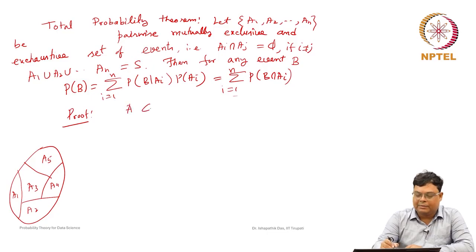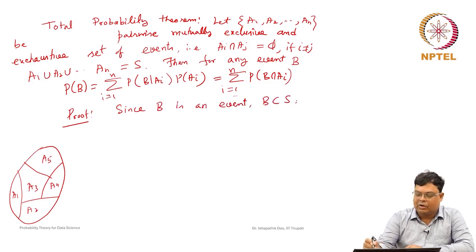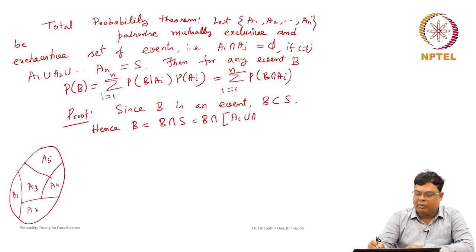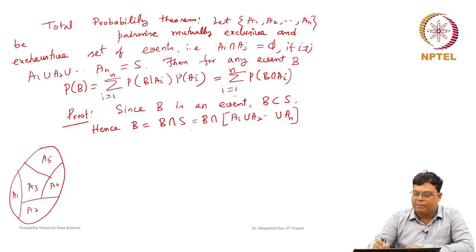Since B is an event, B is a subset of S. Hence B can be written as B ∩ S. Now S can be represented as the union of A1, A2, ..., AN since they are pairwise disjoint and exhaustive. Using the distributive property, this becomes B ∩ A1 union B ∩ A2 union ... union B ∩ AN.